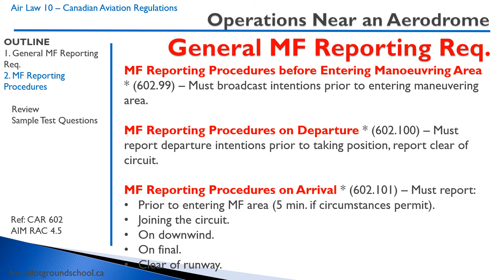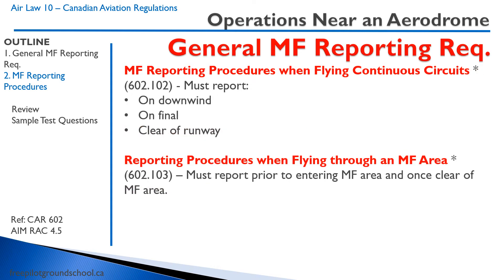On arrival, you are required to report entering the MF area, joining the circuit, on downwind, on final, and clear of the runway. So pretty much whenever you're doing anything other than turning on base, you have to make a radio call. If you're flying continuous circuits, you have to report on downwind, final, and clear of the runway. If you're flying through an MF area with no intention of landing, you have to report prior to entering the MF area and once clear of the MF area.